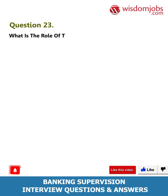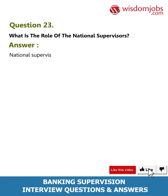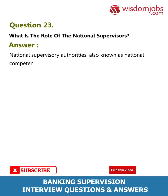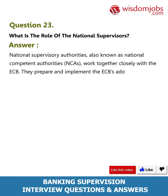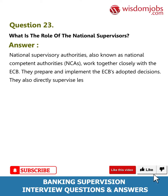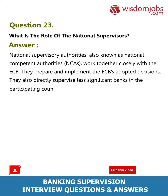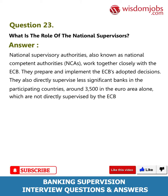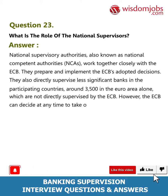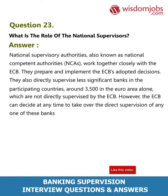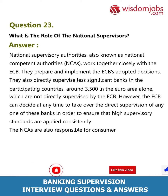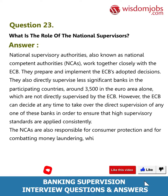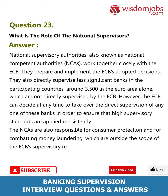Question 23: What is the role of the national supervisors? Answer: National competent authorities (NCAs) work closely with the ECB, preparing and implementing the ECB's adopted decisions. They also directly supervise less significant banks — around 3,500 in the euro area alone — not directly supervised by the ECB. However, the ECB can decide at any time to take over direct supervision of any such bank. NCAs are also responsible for consumer protection and combating money laundering, which are outside the scope of the ECB's supervisory responsibilities.